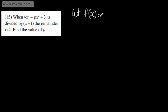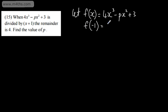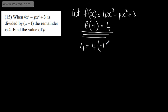Let's look at question 15. It says when 4x cubed minus px squared plus 3 is divided by x plus 1, the remainder is 4. We're asked to find the value of p. So, letting f(x) equal 4x cubed minus px squared plus 3 — where p is a constant and x is the variable — we set f(-1) equal to 4. That gives us: 4 equals 4 times (-1) cubed, which is -1, minus p times (-1) squared, which is 1, plus 3.